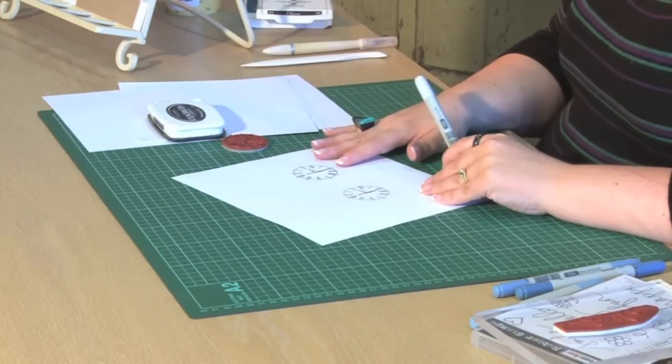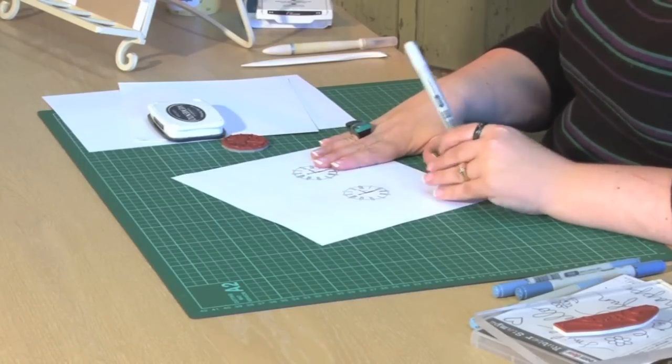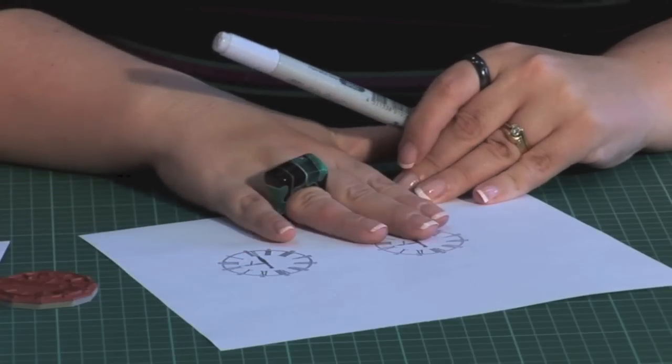I have here two different inks that I've stamped out. This is Memento Tuxedo Black, recommended for Copic markers, and the other is a water-based ink.